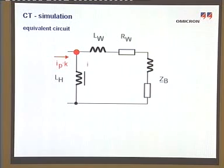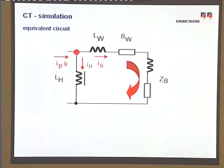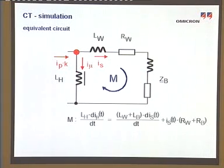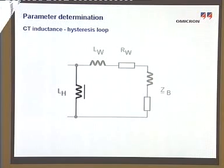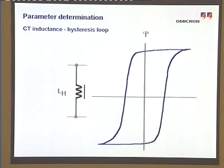According to Kirchhoff's law at the red node, the secondary current is merely the image of the primary current distorted by the magnetizing current. The secondary current is of special interest because it flows through the relay. It can be calculated via the mesh M and Kirchhoff's law. Special attention has to be paid to the magnetizing inductance. When having a closer look at this quantity, it becomes obvious that it is a non-linear element due to the magnetic behavior of the iron core, known as the hysteresis loop.